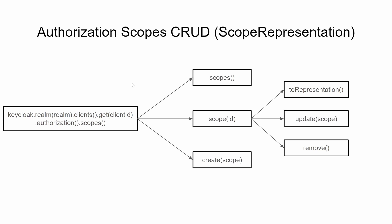Similarly for scopes, authorization.scopes().scopes() gives us the list of ScopeRepresentations. .create() will create the specific scope. .scope(id) provides a pointer to that specific scope, and .toRepresentation() gives the ScopeRepresentation object. .remove() will remove it, and .update() will update the scope representation.